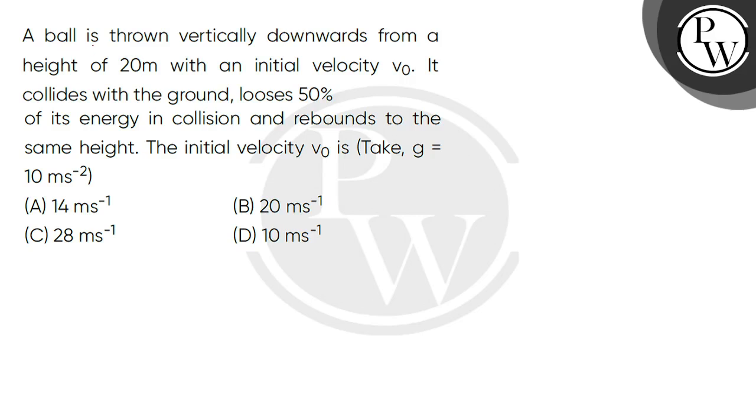Hello, let us read the question. A ball is thrown vertically downwards from a height of 20 meter with an initial velocity V0. It collides with the ground, loses 50% of its energy in collision and rebounds to the same height. The initial velocity V0 is.